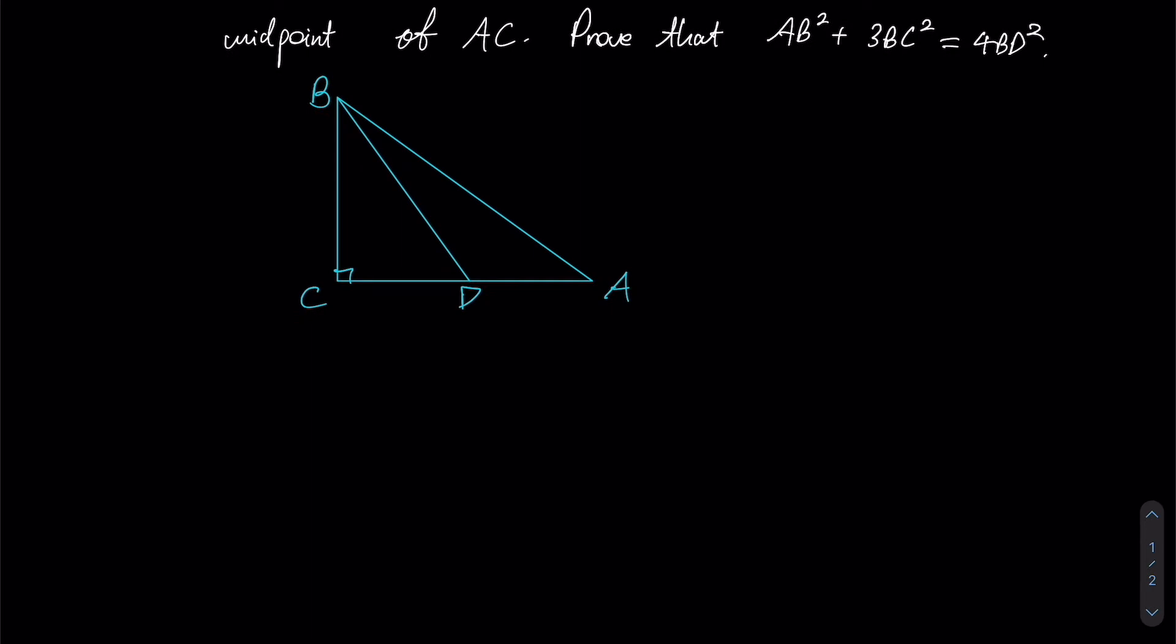Every time we have a proving question, we have the freedom of either working from left to right or from right to left. In this case, if we were to start from the right, we simply have 4BD², and it would be really hard for us to work from there. Starting from the left would be more advisable since we have two different variables which we can draw relationships between. Therefore, by Pythagoras' theorem...